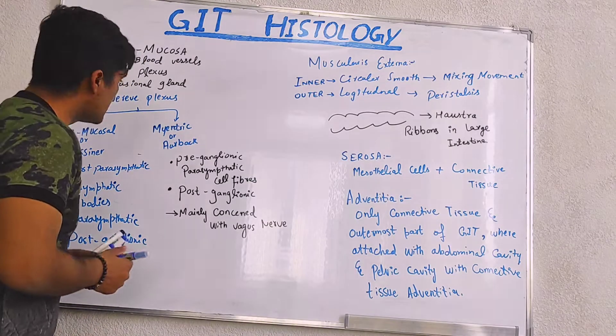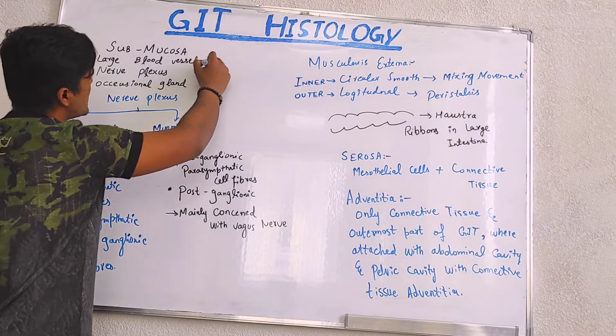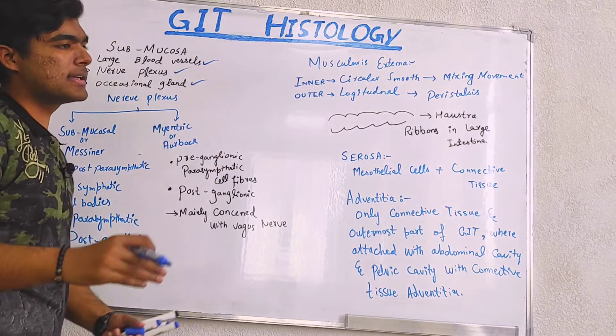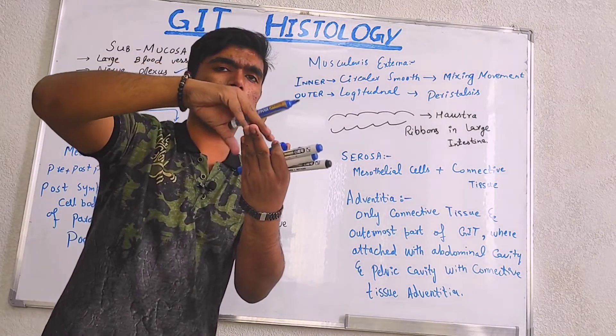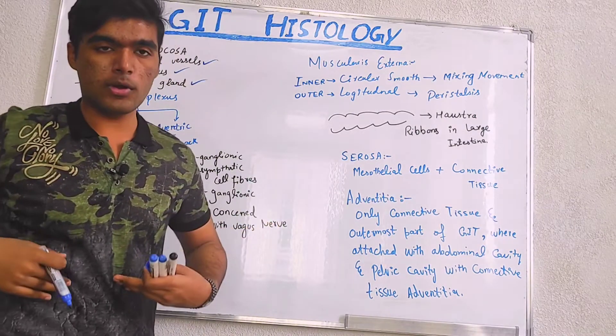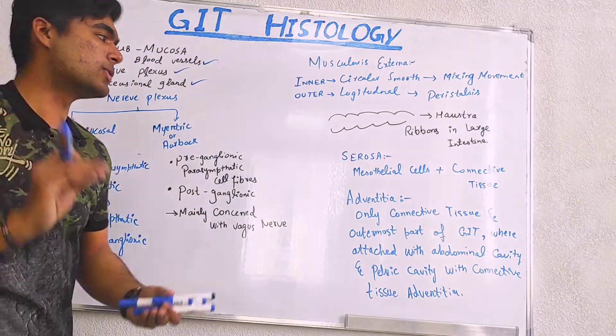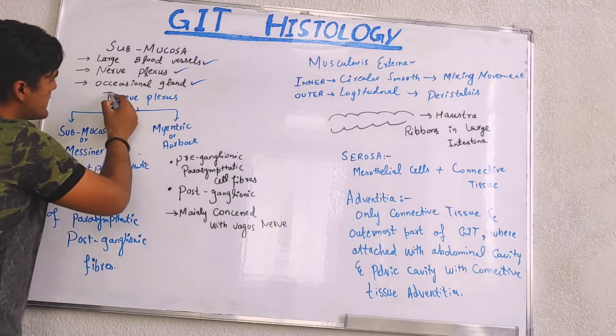Talking about further details, so we have submucosa which is possessing large blood vessels, nerve plexus, and occasional glands. Occasional means which are present, which are not present all around, all throughout the organs. They are present occasionally at distant locations.